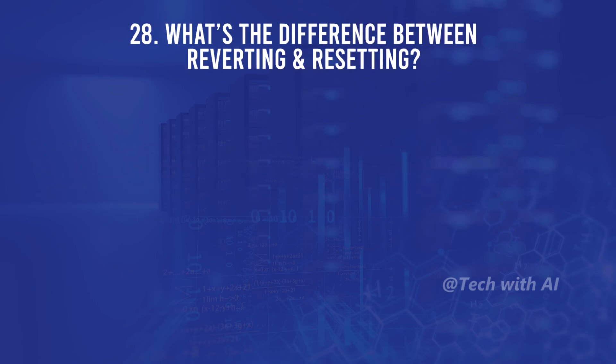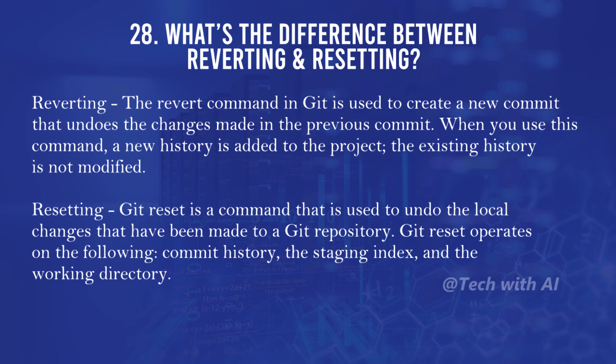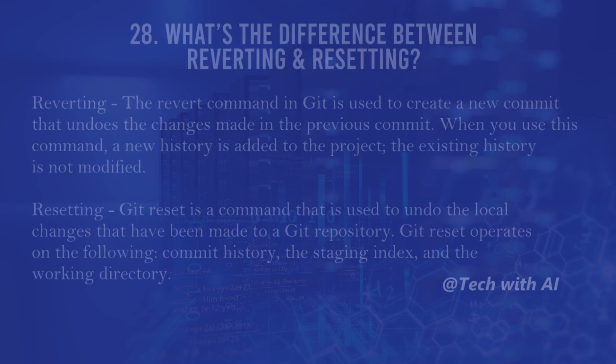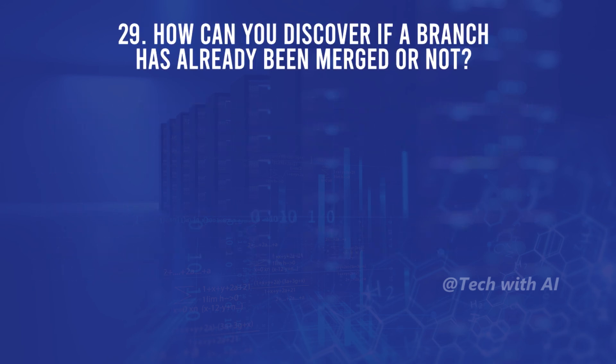What's the difference between reverting and resetting? Reverting: the revert command in Git is used to create a new commit that undoes the changes made in the previous commit; when you use this command a new history is added to the project but the existing history is not modified. Resetting: git reset is used to undo local changes made to a Git repository; git reset operates on the commit history, the staging index, and the working directory.